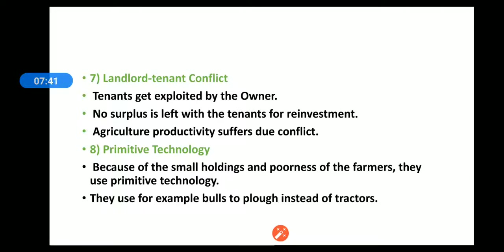Indian agriculture is essentially a backward agriculture. In coming classes, we are going to discuss the policies which have been implemented and which are going to be implemented for the improvement of the agricultural sector. We will also discuss what benefits have come from those policies and how our agriculture sector has improved. That's all, thank you.